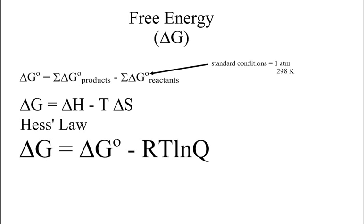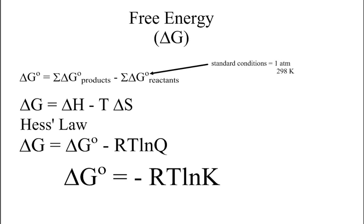Now, at equilibrium, Q is going to equal 1, and if you take the natural log of 1, you come out with 0. So therefore, free energy at equilibrium is going to be 0. Once we're at equilibrium, Q equals K. K is found the same way as Q — it's the products raised to their coefficients divided by the reactants raised to their coefficients — and that will give us the standard free energy for a reaction moving towards equilibrium.